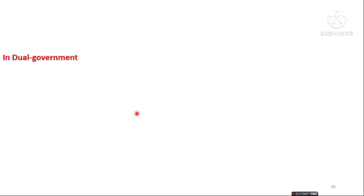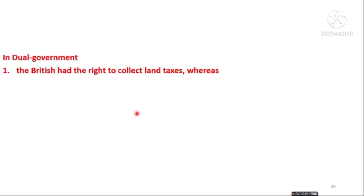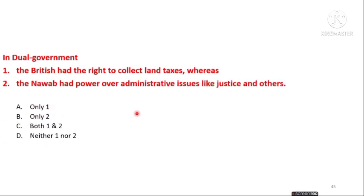In the dual government system, the British had the right to collect land taxes, whereas the Nawab had the power to handle administrative issues like justice and others.